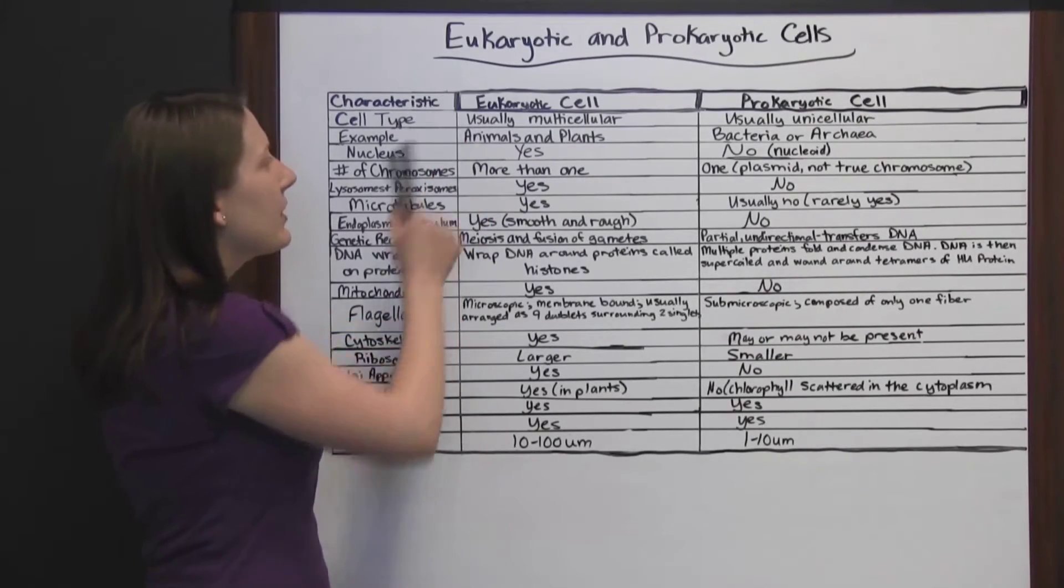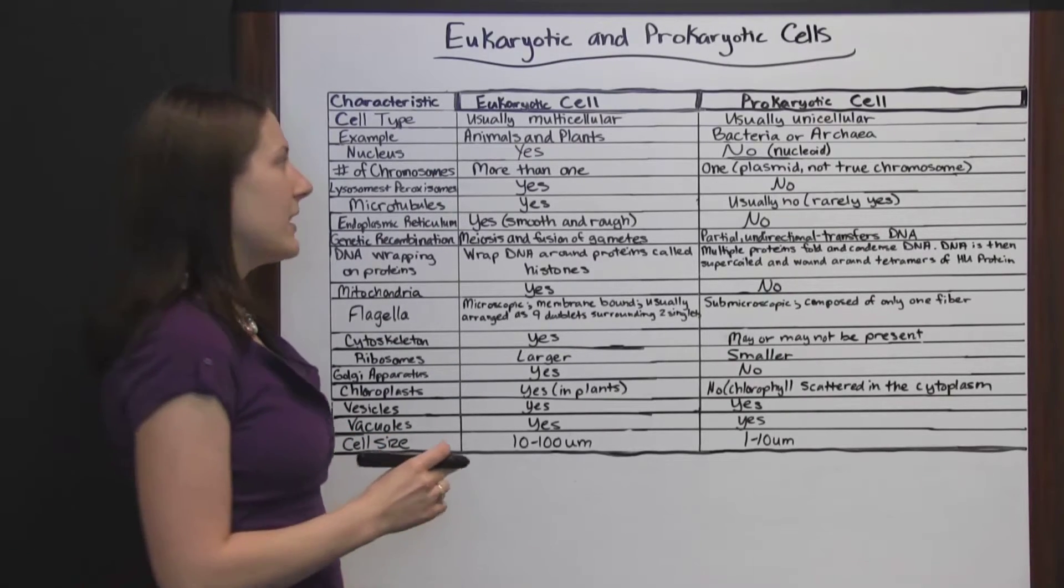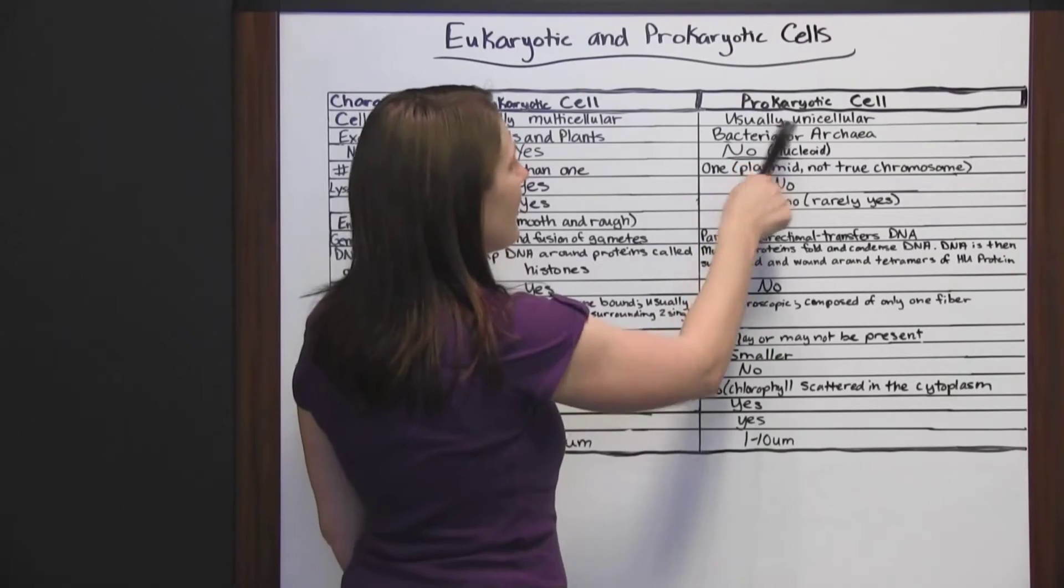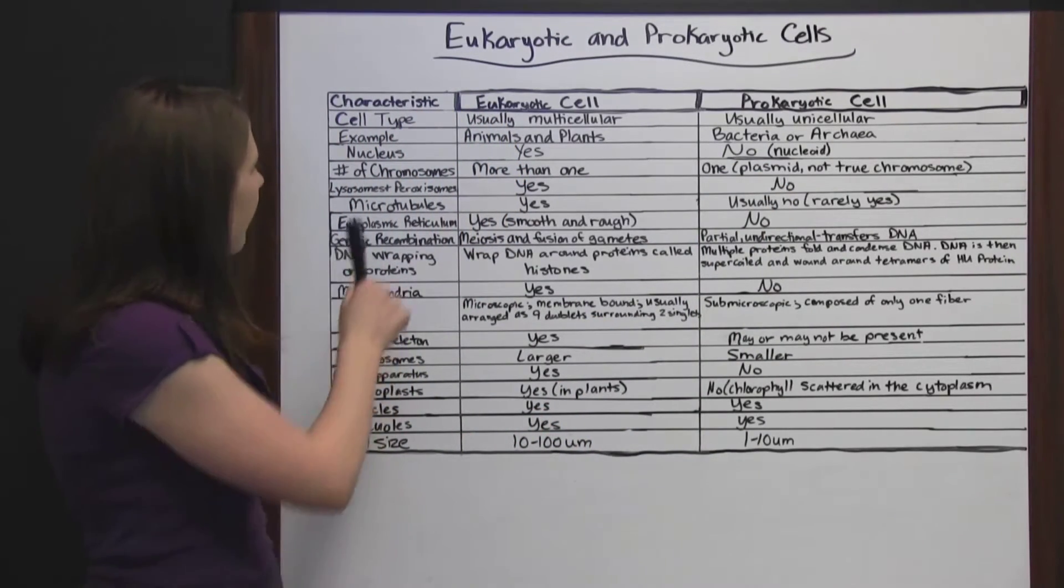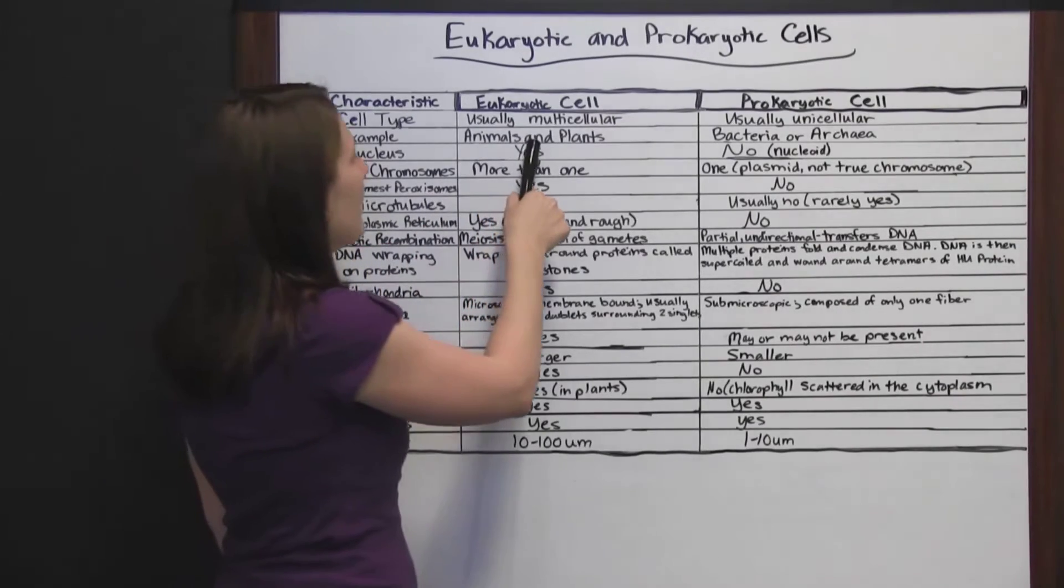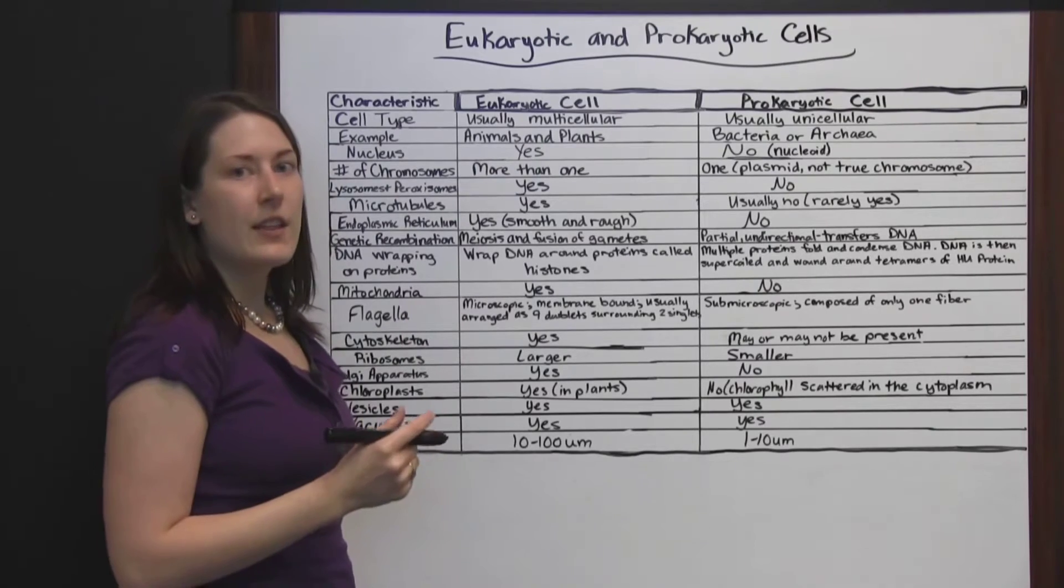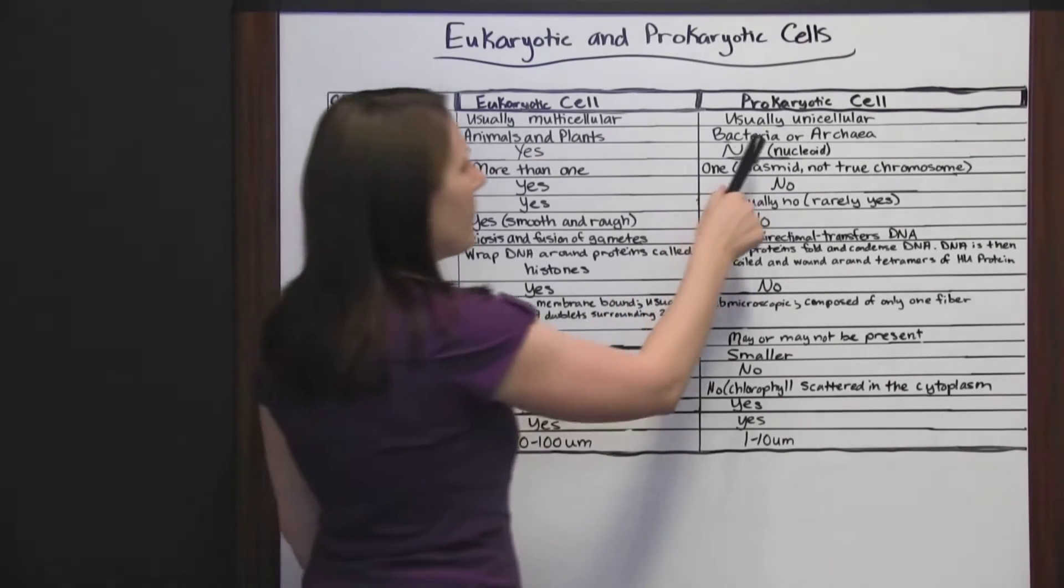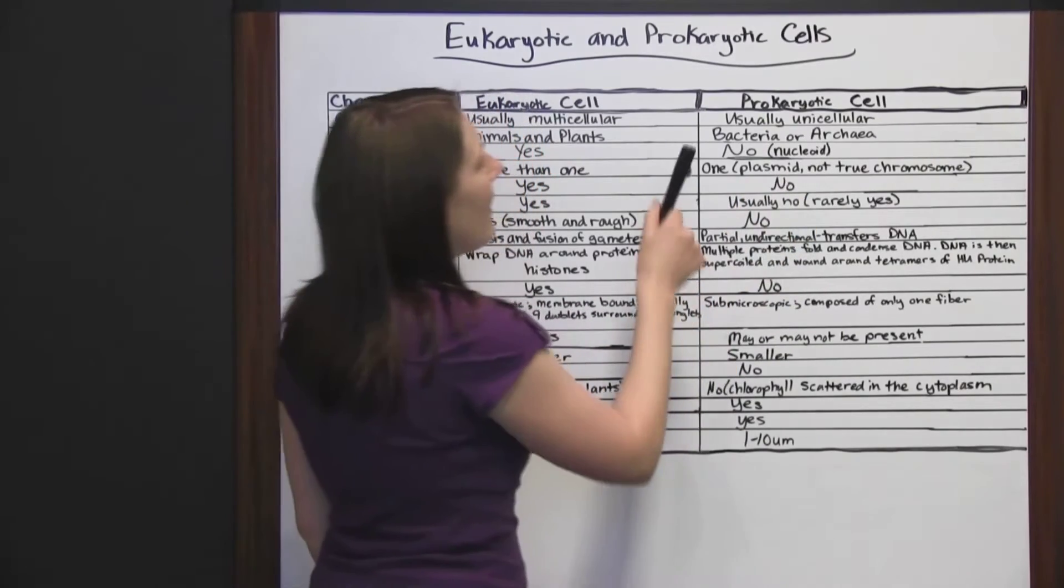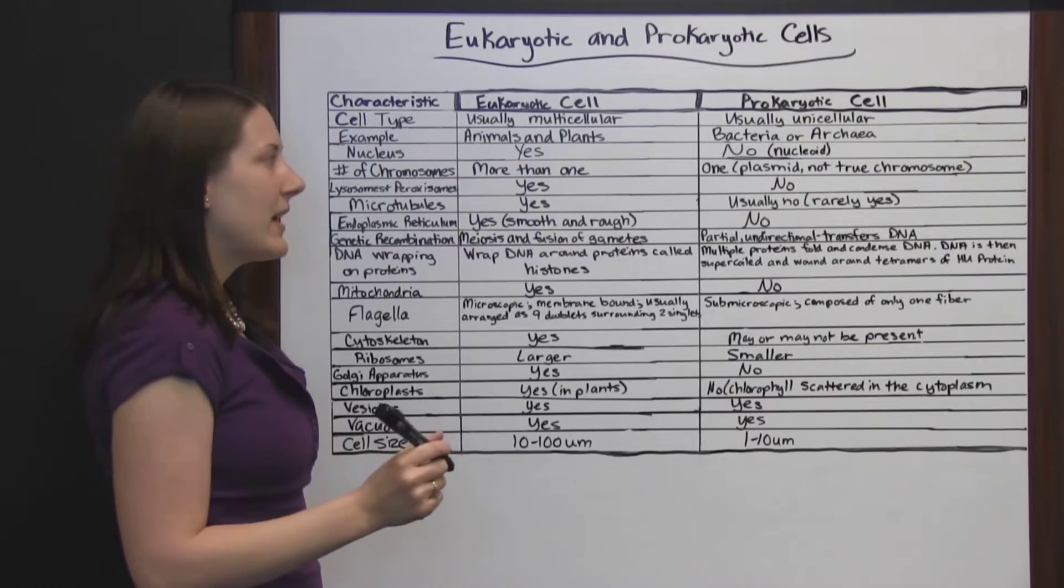Cell type. Eukaryotic cells are usually multicellular. They're going to come in a bundle of cells, where prokaryotic cells are usually unicellular. There would just be one single cell standing by itself. Examples would be animals and plants are composed of eukaryotic cells. There are a lot of cells that make up each animal or plant. Bacteria and archaea are prokaryotic cells. Usually, it's just one cell standing by itself.